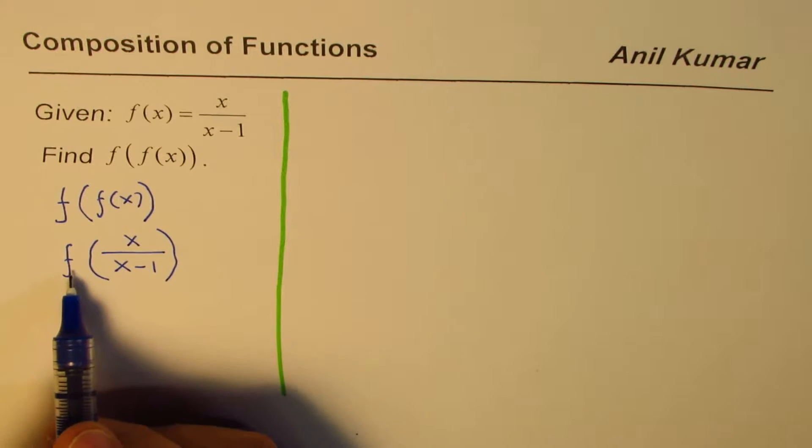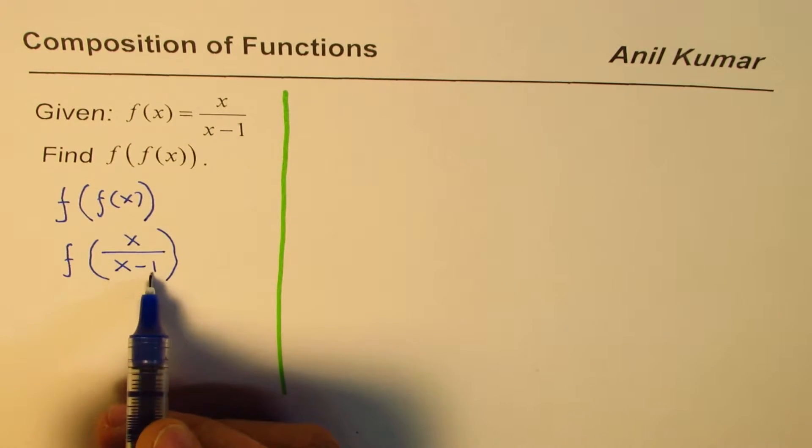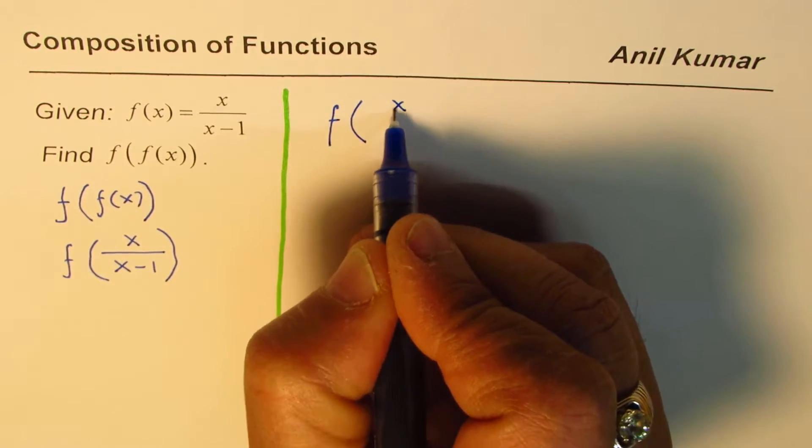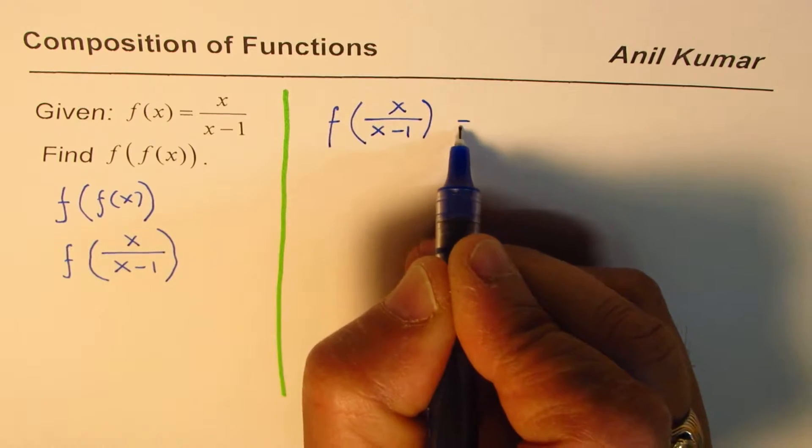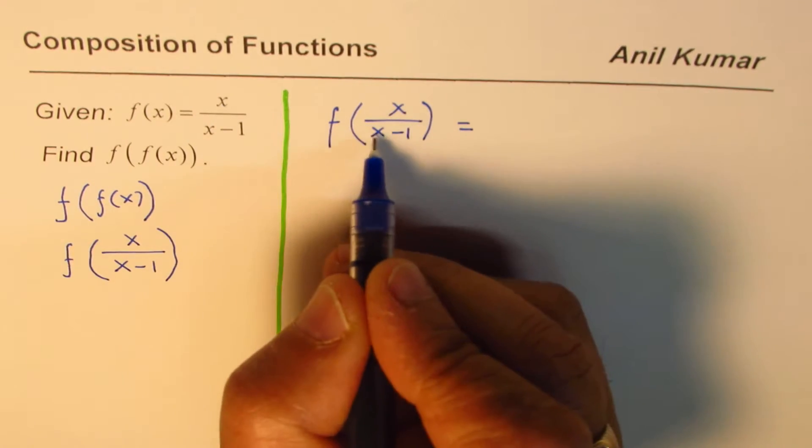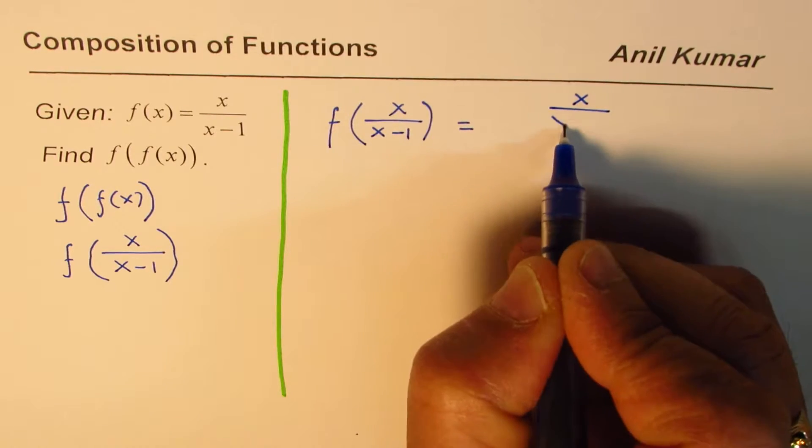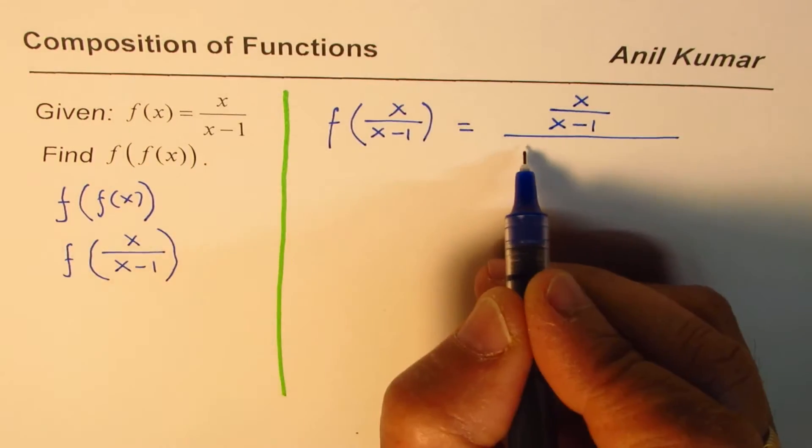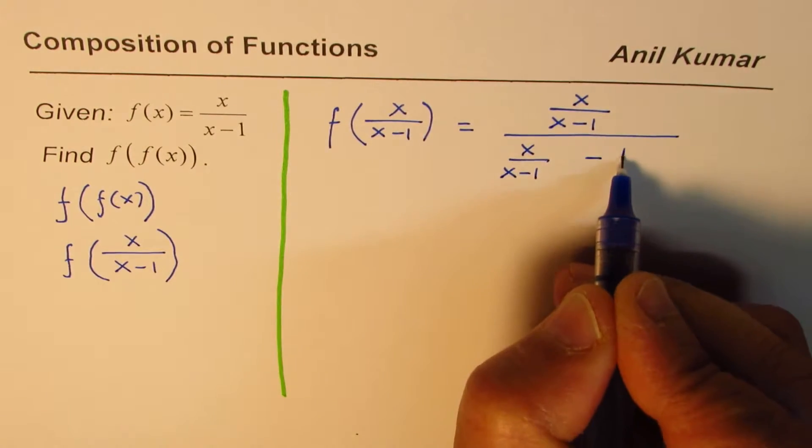I'll do it on the right side. Starting from here, f of this—x has to be replaced by x over x minus 1. So we can write f of x over x minus 1 is equal to x over x minus 1 divided by x over x minus 1 minus 1.